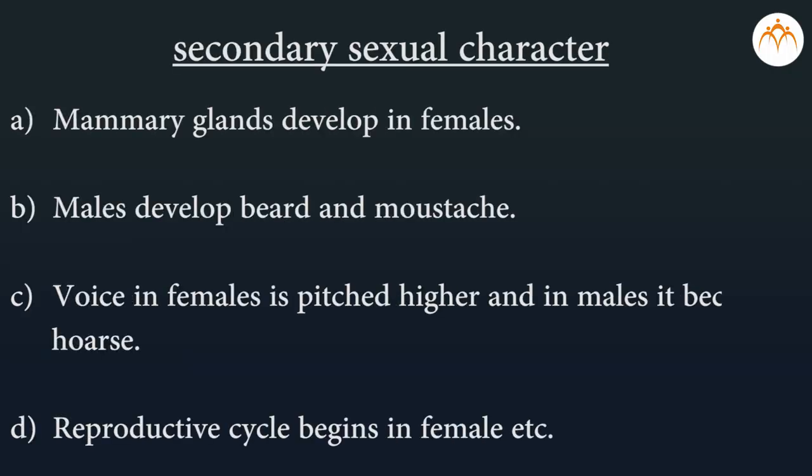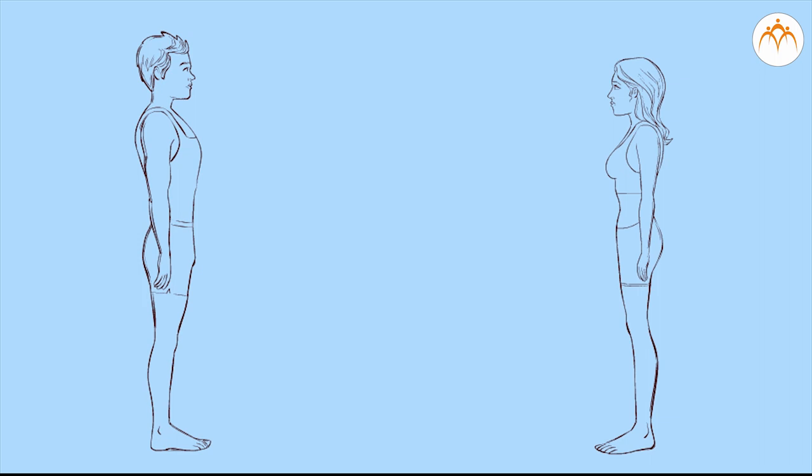Puberty is marked by some important bodily changes called secondary sexual characters. Mammary glands develop in females. Males develop beards and moustaches. Voice in females is pitched higher and in males it becomes hoarse. Reproductive cycle begins in females. Students, let us briefly revise the important events of the process of reproduction in humans through this clip.